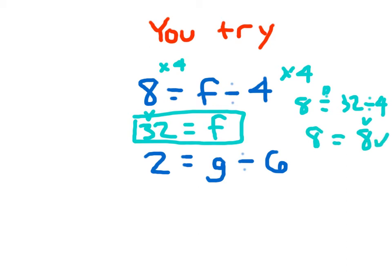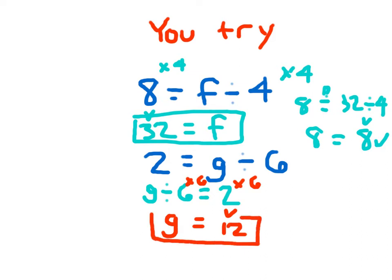For the next one: 2 equals G divided by 6, which is the same as G divided by 6 equals 2. I multiply by 6 on both sides of that equation. The inverse operation of divided by 6 — G divided by 6 times 6 — just leaves us with G. 2 times 6 is 12, so G equals 12 is my solution. Does 12 divided by 6 equal 2? And yes, it does.